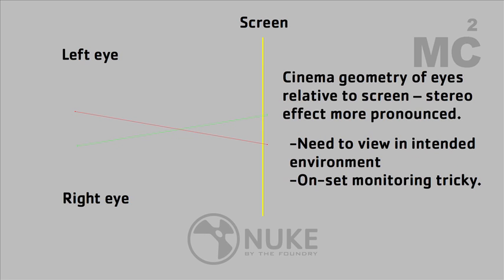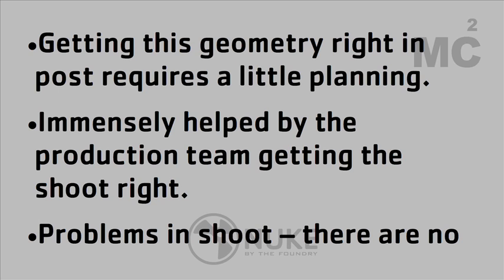There is no real decent way of viewing the intended effect without actually being in the environment you're supposed to be viewing it in. When you're doing stereo work, the best place to view how it actually looks is in a theatre. If the work is intended for screening on a TV in someone's front room, then the best environment to evaluate it is with that kind of smaller geometry. This makes on-set monitoring tricky — it's common for people doing on-set viewing with small monitors to have a different impression compared to how it'll end up in a cinema. Getting all this geometry right in post requires planning.